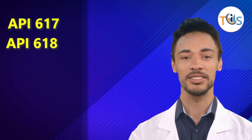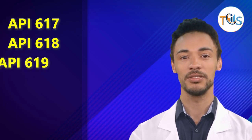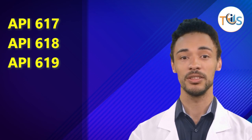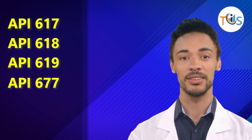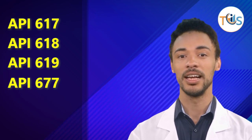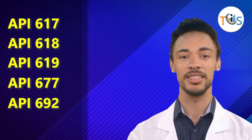Additional standards covered are API Standard 617 Axial and Centrifugal Compressors, API Standard 618 Reciprocating Compressors, API Standard 619 Rotary-type Positive Displacement Compressors, and API Standard 677 General Purpose Gear Units, and API Standard 692 Dry Gas Sealing Systems.